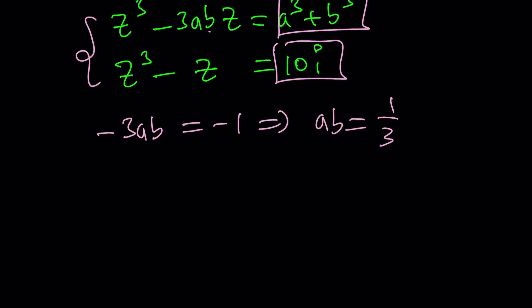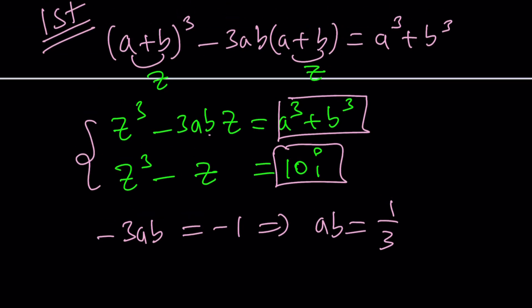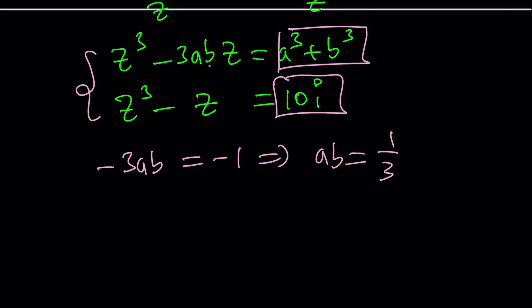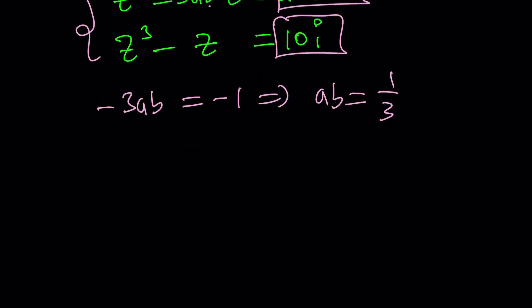By the way, this is kind of contrary to the fact that the channel name, the channel's name is A plus BI, where a and b are real numbers. In this case, they're not real numbers. So A plus BI, forgive me for that. Maybe I should use x and y. But I can't because why not? I could, right? I just missed that opportunity. Anyways, so ab is equal to 1/3, a³ + b³ is equal to 10i. Can I solve this system? And the answer is yes.